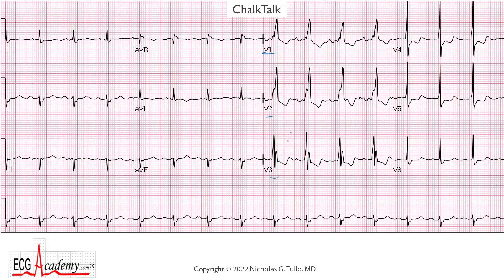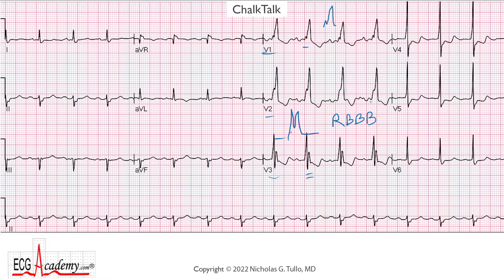That is here in V1, V2, V3 — you've got this very large upright deflection, and you have an RSR' pattern. Look how nice that is in V3. Here in V1, it's sort of a little R, and then the R' kind of goes high. Same thing in V2. So this is consistent with a right bundle branch block, and you can identify this as being one of the major problems with this cardiogram.